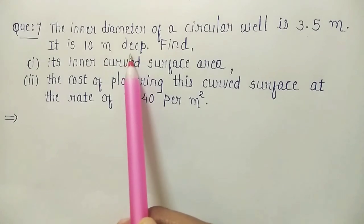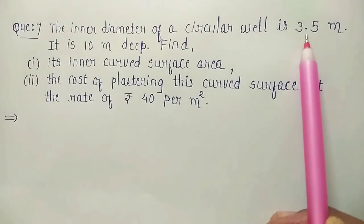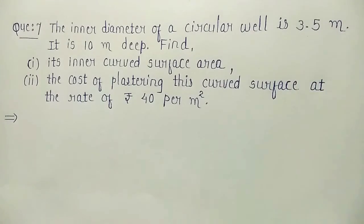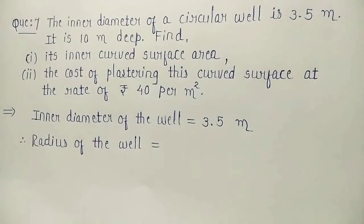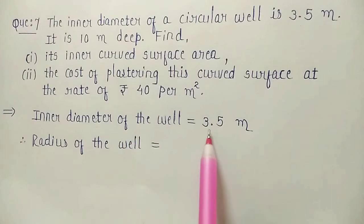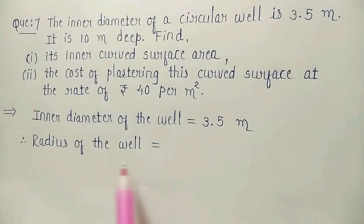Now, we are not given radius. So, first we will find radius from the diameter. We will write diameter of the well, which is given as 3.5 meter. Therefore,